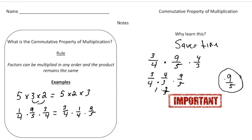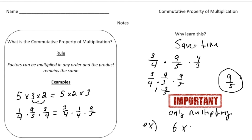So when you have the ability to move numbers around, it saves you time. This is really important: the commutative property of multiplication is only for multiplying. You can't mix it up with other operations. An example where this would not work would be something like 6 times 4 plus 2 — because we have both multiplication and addition, it just would not work.